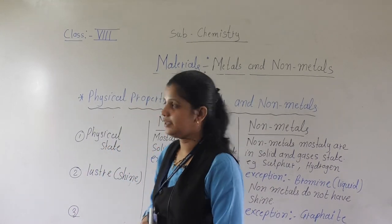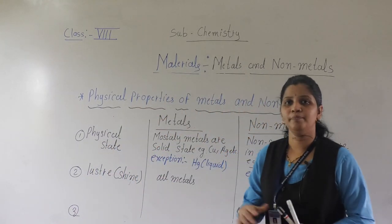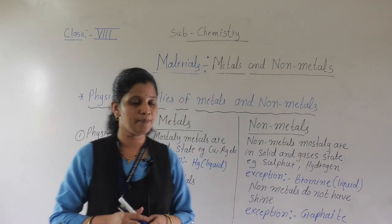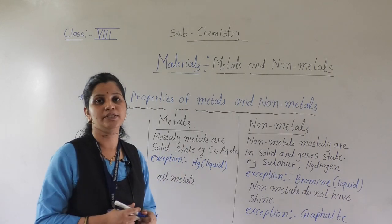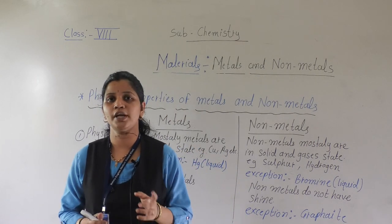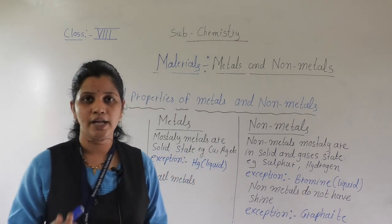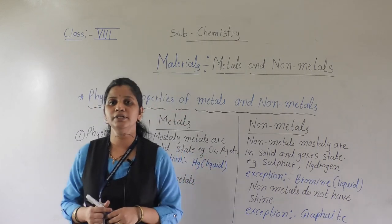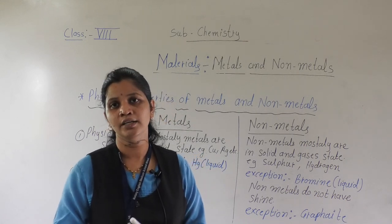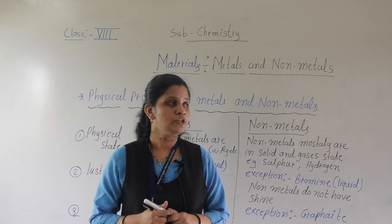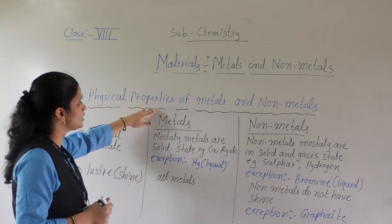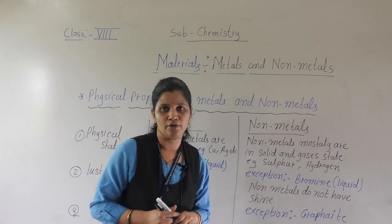Good morning students. Yesterday we discussed some basic points — matter and classification of matter, elements, how many elements are present. There are total 118 elements, out of which 92 elements are natural elements. Out of these 92 elements, 70 elements are metals and 22 elements are non-metals. Today we will start the next point, that is the physical properties of metals and non-metals.